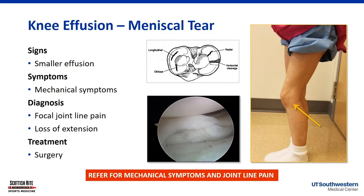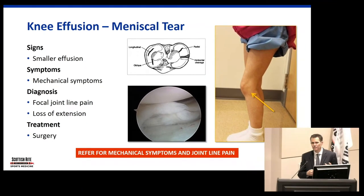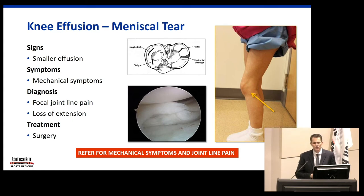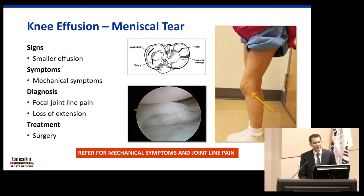Not all meniscal injuries have a big effusion, but they can. So a twist, a pop, and they have joint line pain — it just hurts on the side of their joint, really focal to the side. Their Lachman is negative, no patellar apprehension, nothing positive on x-rays, but they're very tender on their joint line. That may be an acute meniscus tear. Maybe a need for an MRI. If that effusion is there, there's often an internal derangement that needs to be treated.